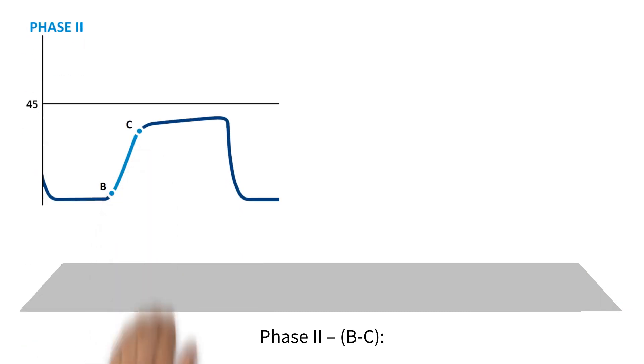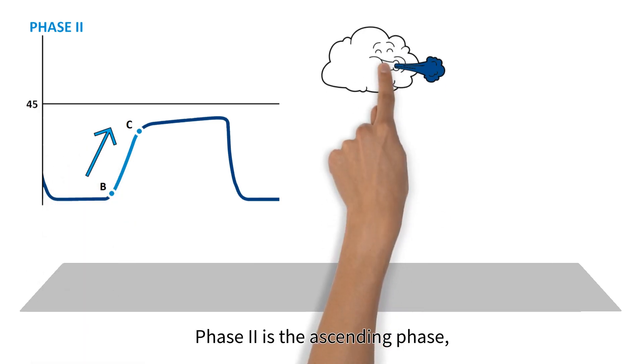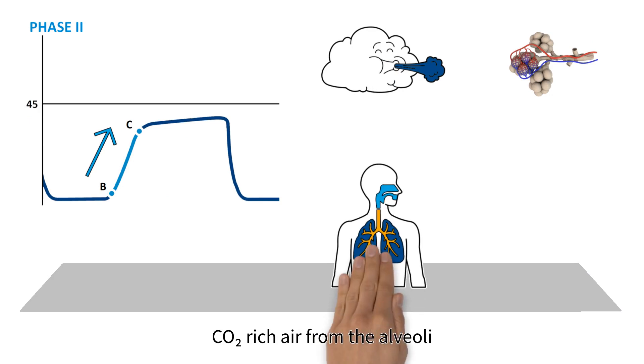Phase 2, B to C, expiratory upstroke. Phase 2 is the ascending phase. CO2-rich air from the alveoli begins to reach the upper airway and mix with the dead space air.